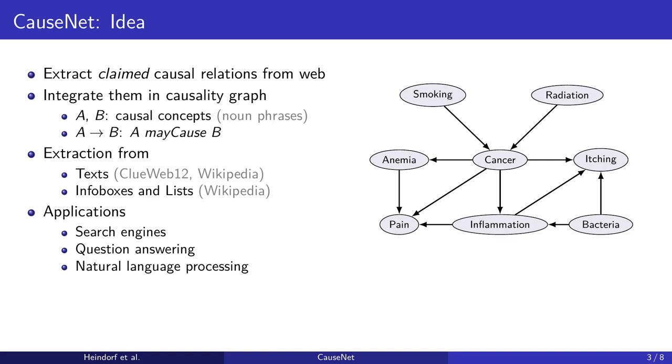Constructing such a causality graph is certainly challenging. For example, not everything which might be found on the web might be true in a scientific sense. Nevertheless, the web is an important source of causal information where many people express their causal beliefs.